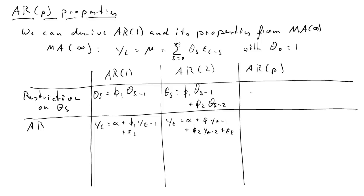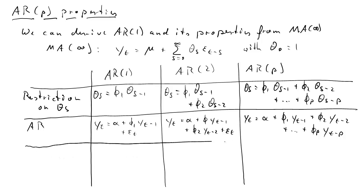And you can possibly already guess what the required restriction on the MA(∞) parameters for an AR(p) process is going to be. We're going to relate theta_s to theta_{s-1} up to theta_{s-p}, and that will deliver that AR(p) process. There's actually an epsilon_t missing at the very end. You need to add that.